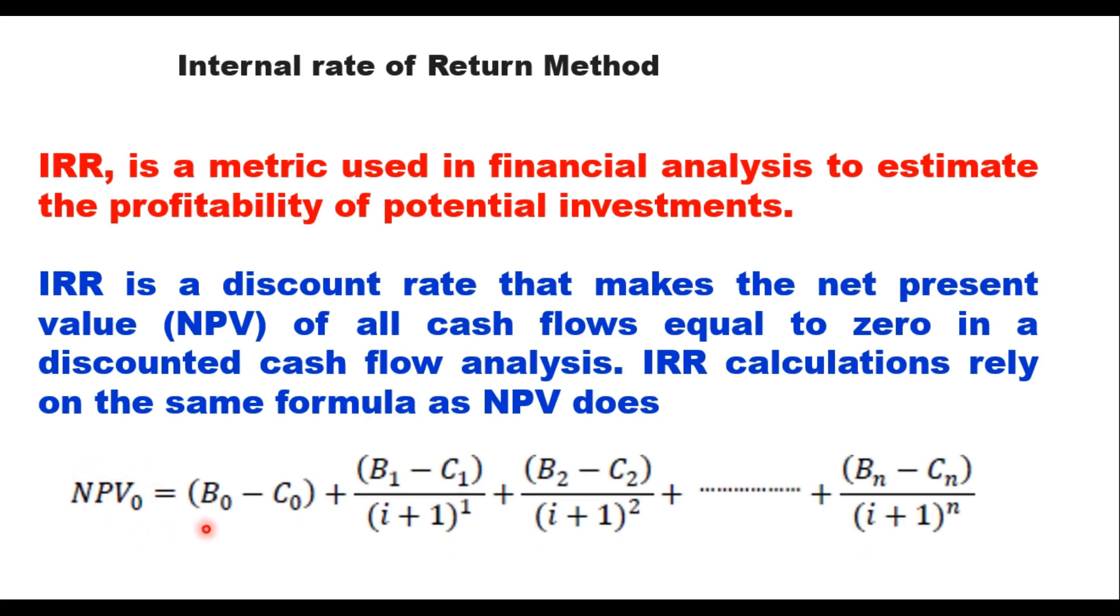And this is the equation for NPV. That NPV in 0 year is B0 minus C0 plus B1 minus C1 upon i plus 1 power 1 and so on. And these variables I explained to you earlier. These are benefits, they are cost. 0 year, 1 year, 2 year, and 3 year.